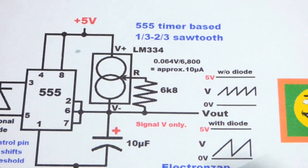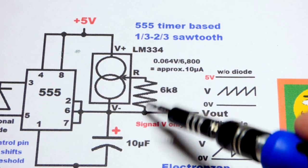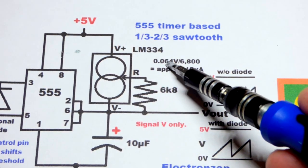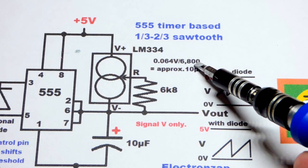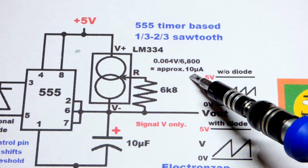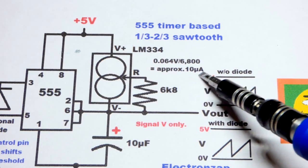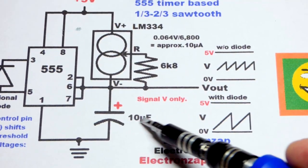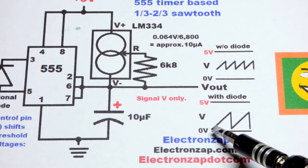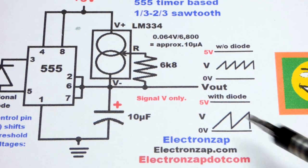It's just three terminals. You use a resistor to set the current. You take this voltage, 64 millivolts, and divide it by the resistance. That's going to give you the current, which is going to be about 10 microamps. And 10 microamps charging a 10 microfarad capacitor gets you about 1 volt per second steadily.